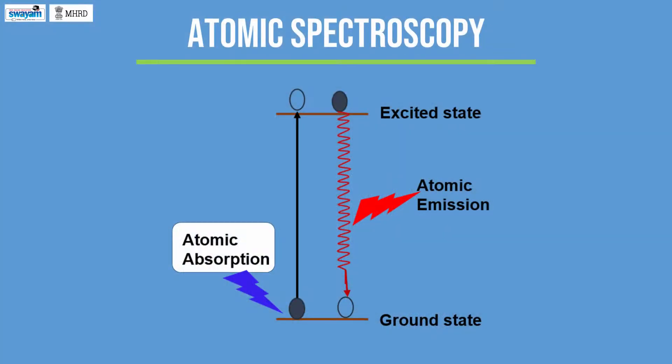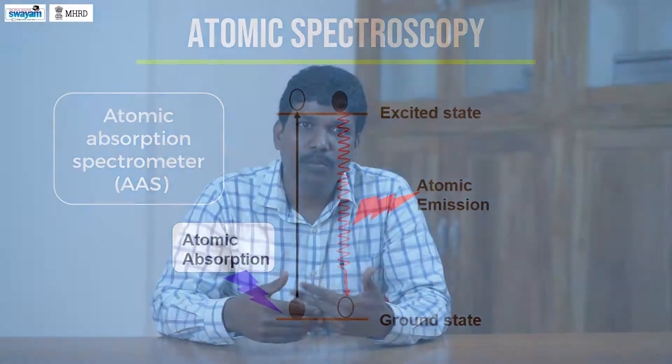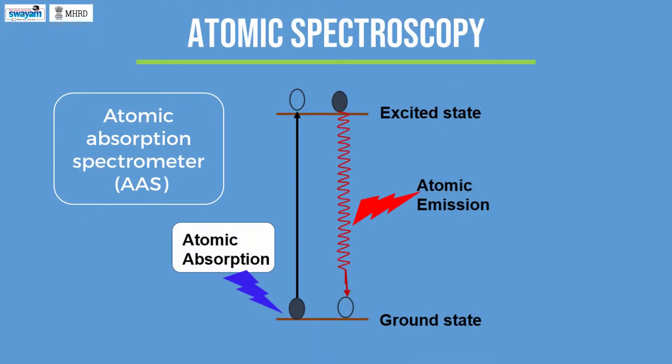Atomic absorption takes place if an electron sitting in the ground state is supplied with energy in terms of light. Atomic absorption can be measured by an atomic absorption spectrometer — in short form it is called AAS.